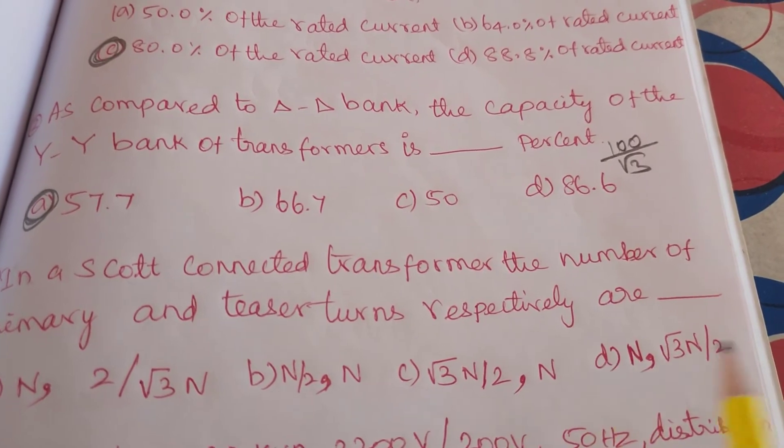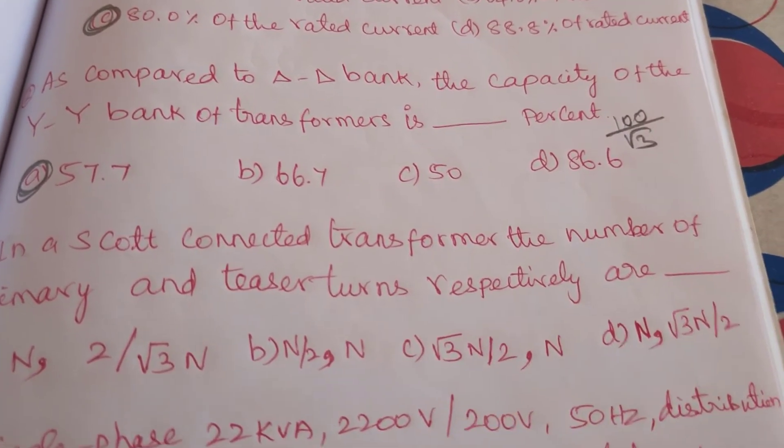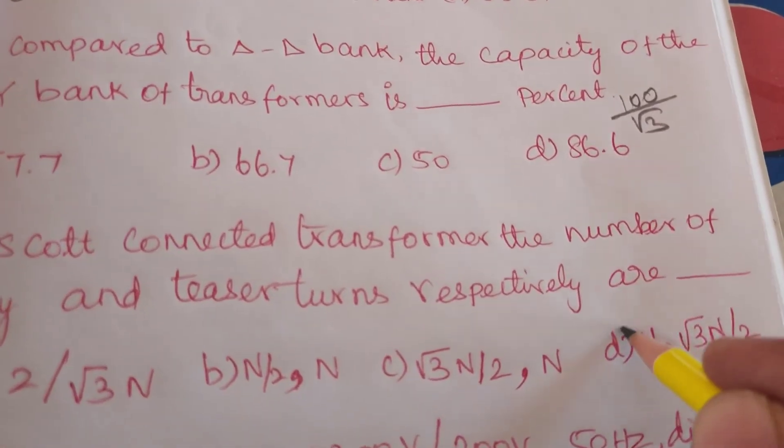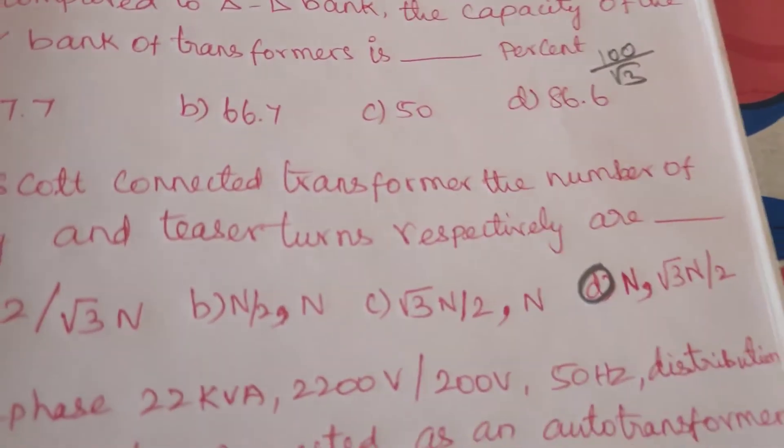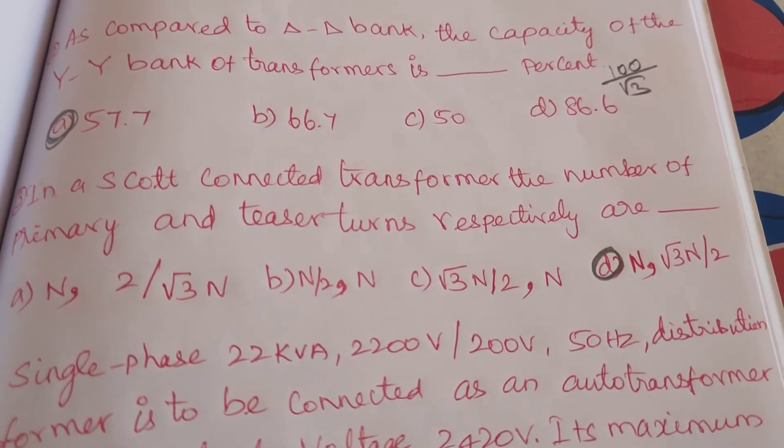In a SCART connection transformer, the number of primary and treasury turns respectively are N comma root 3 N by 2. This is the answer.